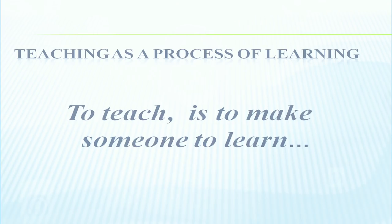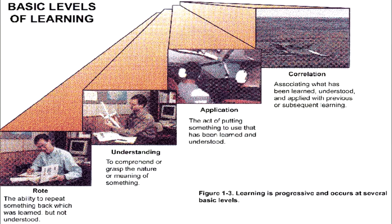Teaching as a process of learning: to teach is to make someone learn. We have to see the basic levels of learning, which are divided into four parts: rote, understanding, application, and correlation. Rote is the ability to repeat something without understanding the concept. Understanding involves comprehending or grasping the meaning of something. Application is the act of putting something to use — what has been learnt or understood. Correlation means applying something with the help of subsequent and previous knowledge.